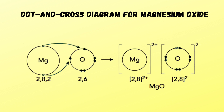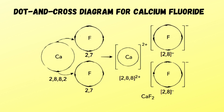Another example is magnesium oxide, where two electrons from magnesium are transferred to oxygen. Another example is calcium fluoride, where calcium donates its two electrons to two fluorine atoms. Thus calcium becomes Ca²⁺ and fluorine becomes F⁻, giving the formula CaF₂.